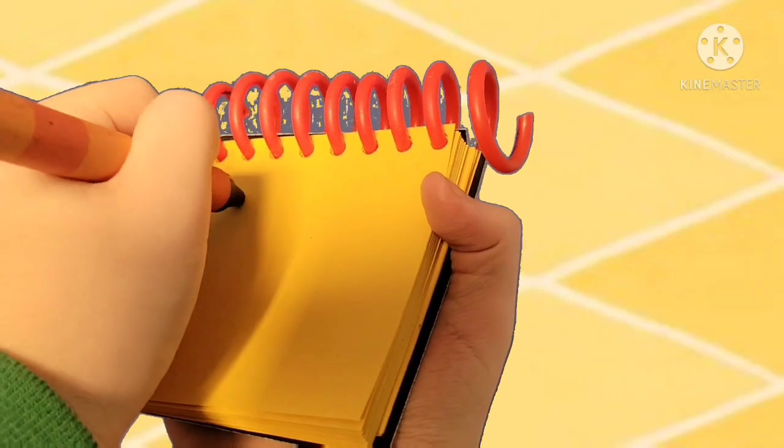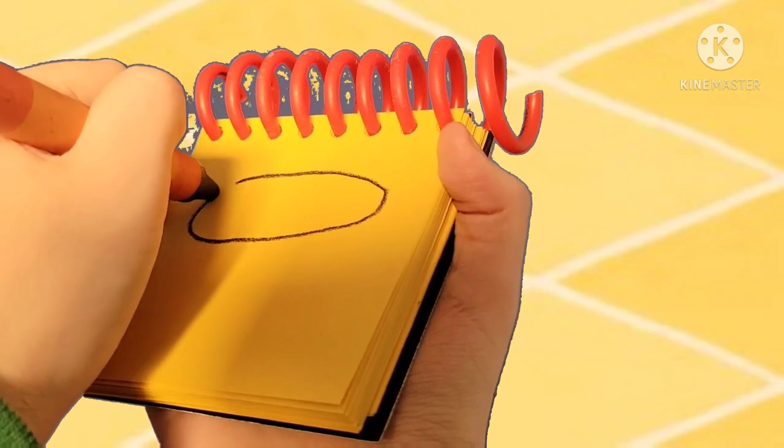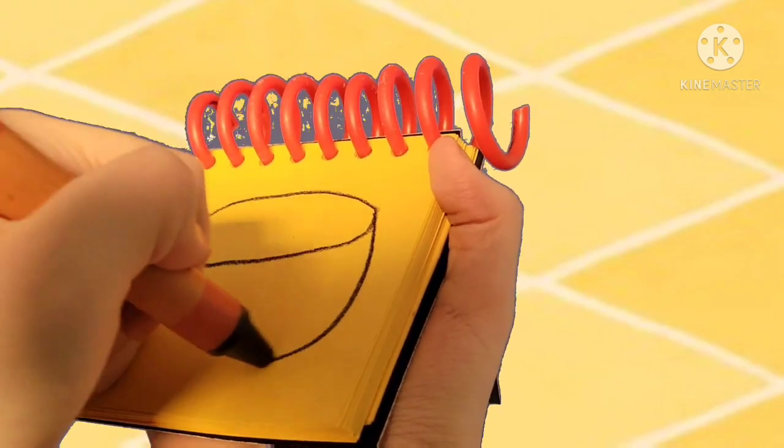So, let's draw a big bowl. Let's start with an oval, then a semi-circle on the bottom.